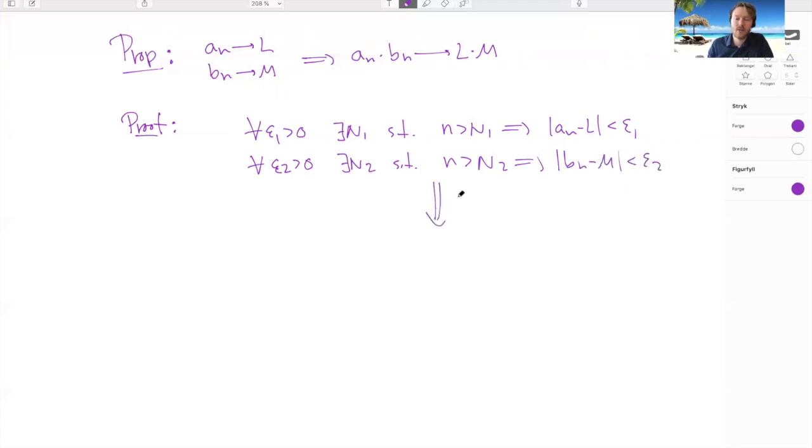The point now is to show that this implies that for every epsilon bigger than 0, there exists an n such that when n has passed N, an times bn minus l times m is smaller than epsilon.